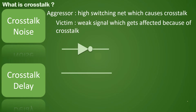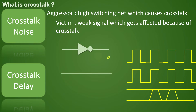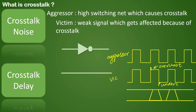Diagrammatically, crosstalk occurs when switching is happening very close to the victim net. Looking at the waveform, the top one is the aggressor net and the bottom one is the victim net. When both are switching, because of coupling capacitance there can be an undershoot or an overshoot. This overshoot is going above the margin, and the undershoot is going below.